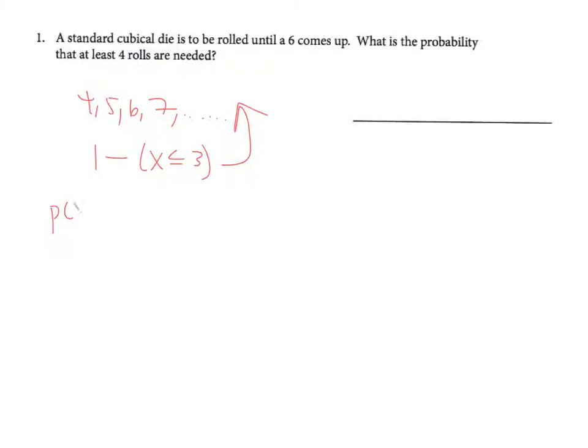Okay, so the probability that one roll is needed means the first time I roll the die, I immediately get a six. The probability of that is one sixth.